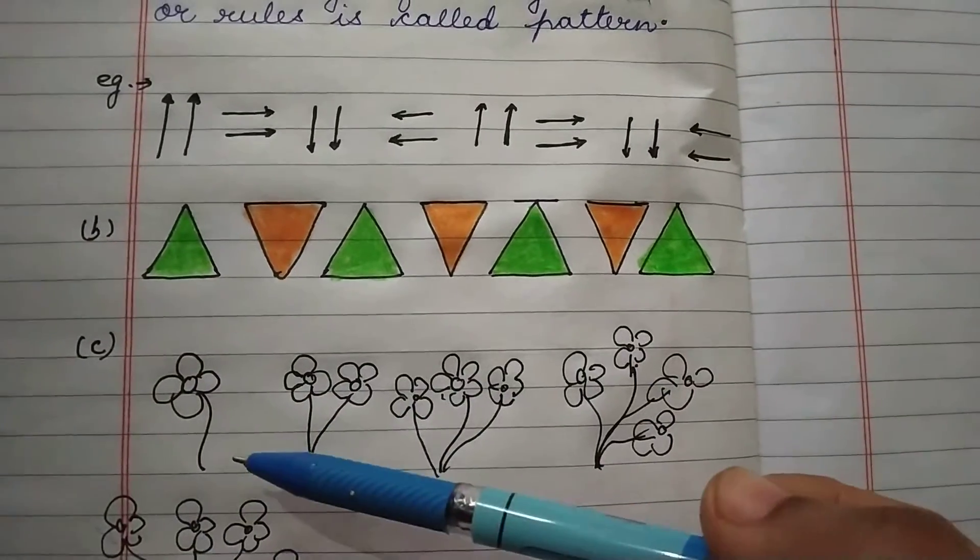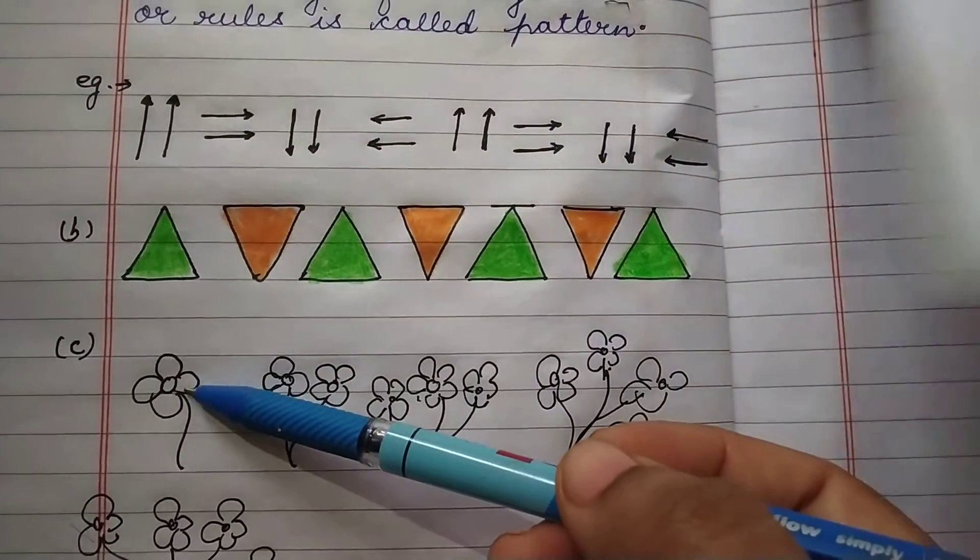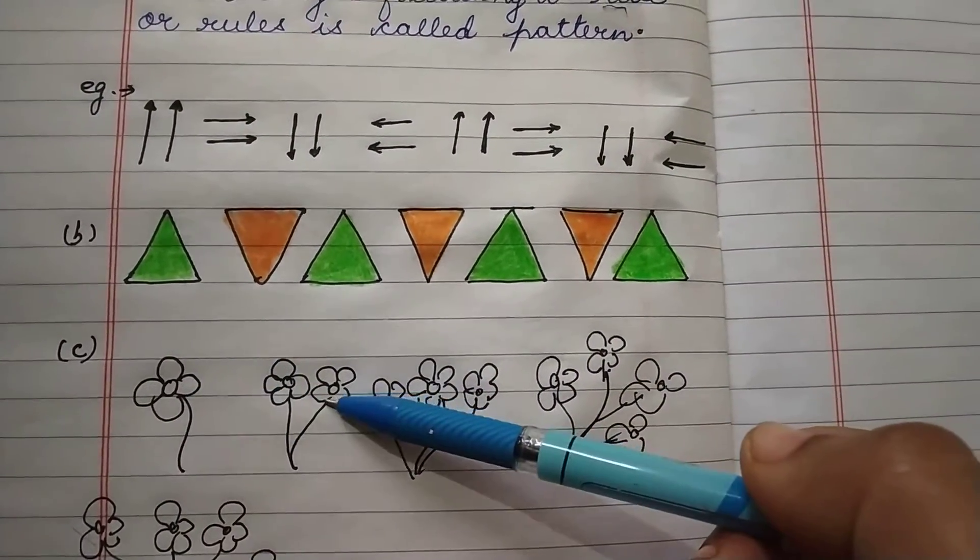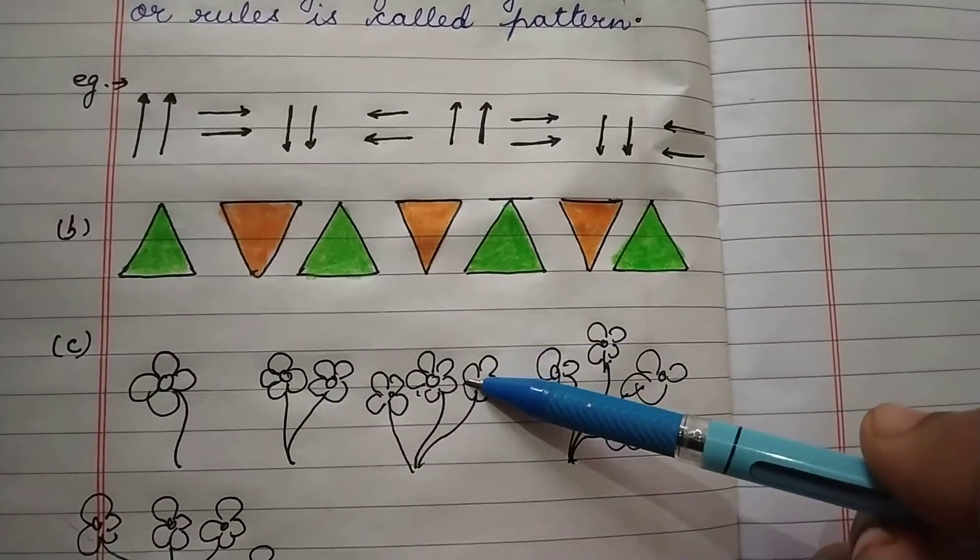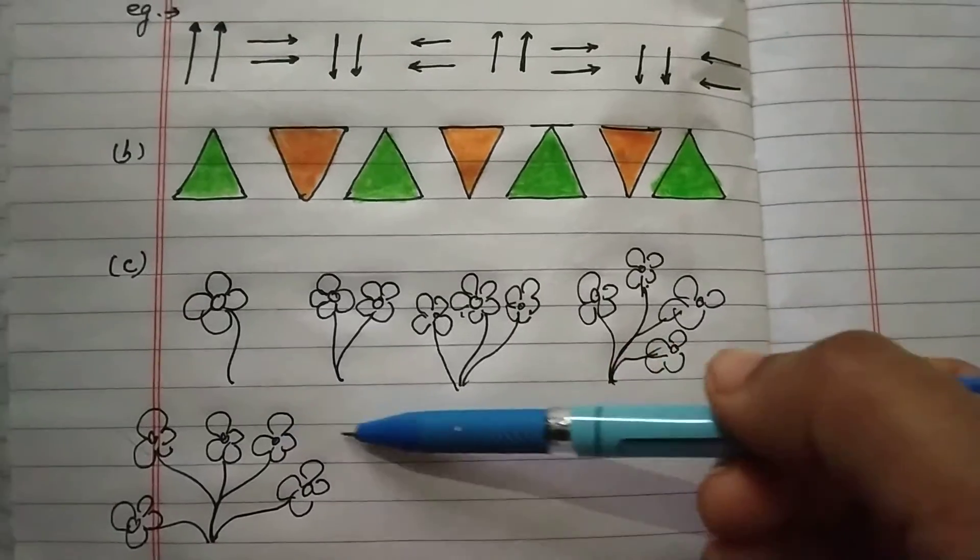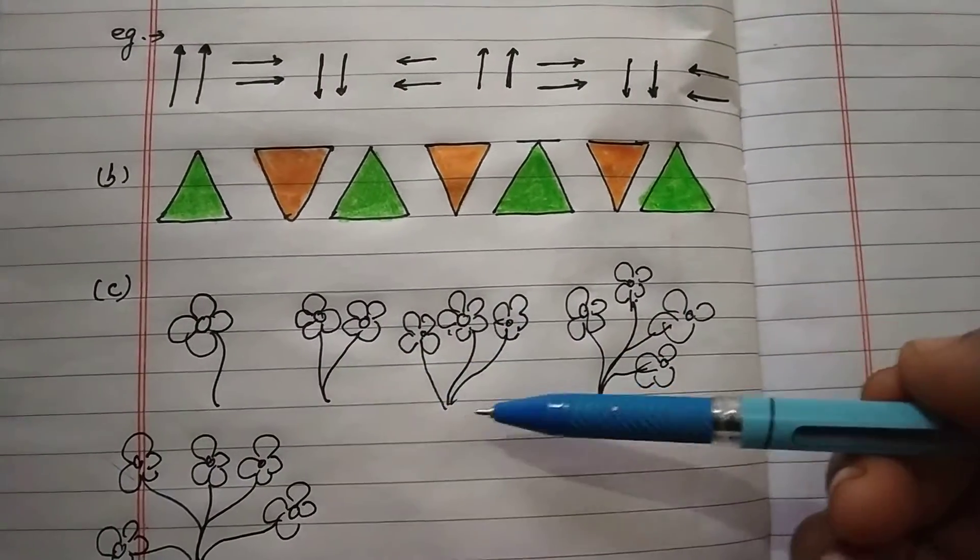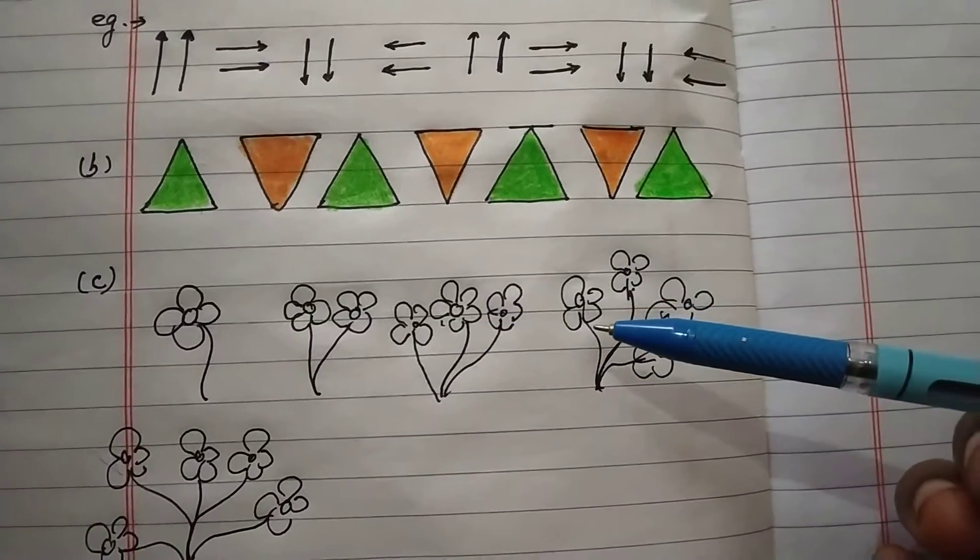In C part, in first figure, only one flower is there, then two flowers are there, then three flowers are there, then four flowers, then five flowers, and so on. In next figure, the six flowers will be there, then seven flowers will be there, like this.